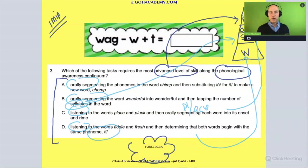The orally segment the phonemes, the word chimp, and then substitute O for I to make the new word chomp. Now here we have substituting, and maybe you saw that. You know what? Maybe this is the answer, by the way. Maybe, remember we did this before in a previous question? Because I know a lot of you are saying, I've seen this before.